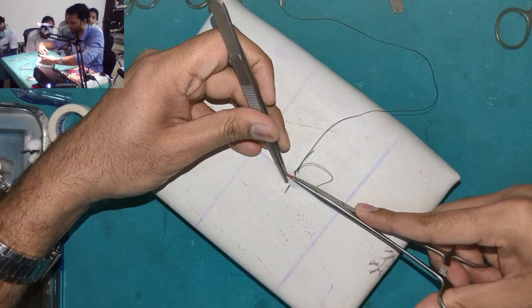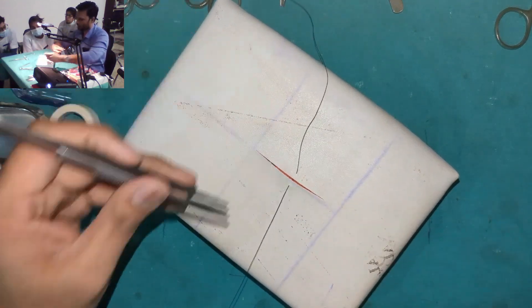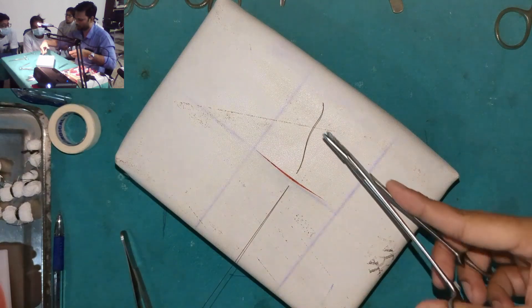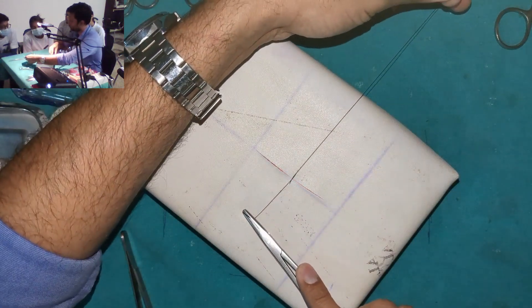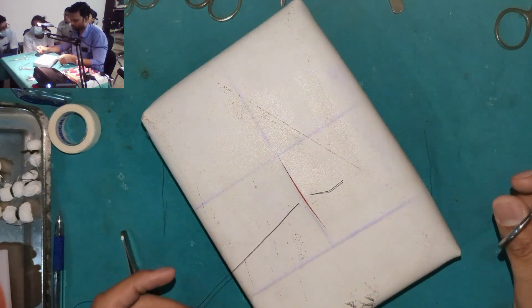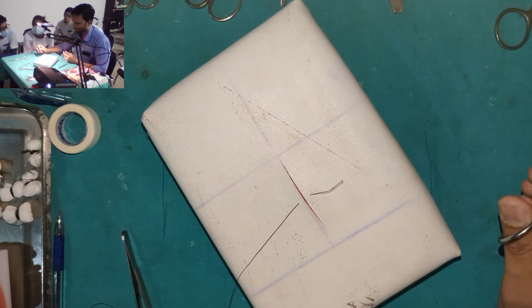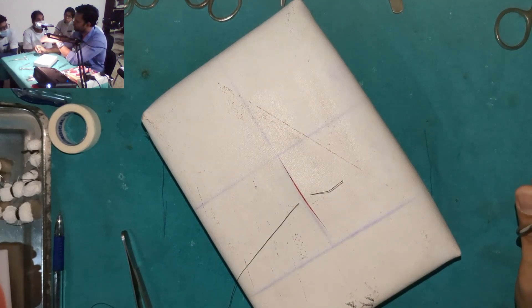Now again, I am going to take a bite perpendicular to the tissue and the suture is now perpendicular to the incision line. Can you see? Now, I am going to show you a knot.